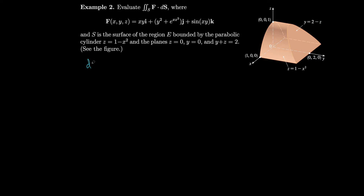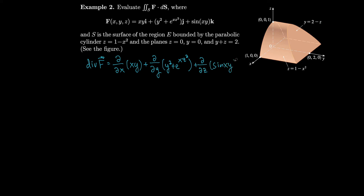Assuming positive orientation, we calculate the divergence of f: the partial with respect to x of xy, plus the partial with respect to y of y² + e^(xz²), plus the partial with respect to z of sin(xy). That ends up being y + 2y, which is 3y.